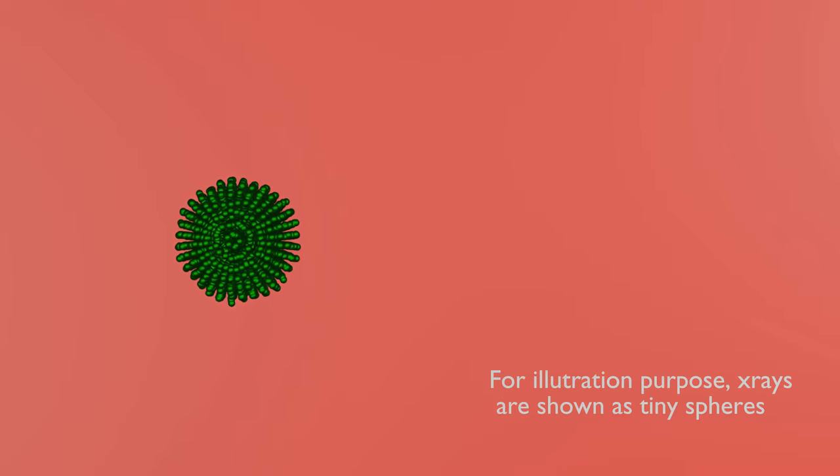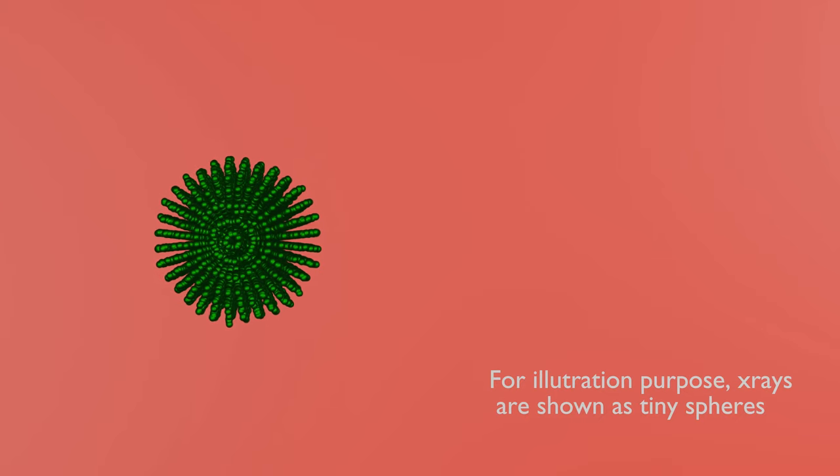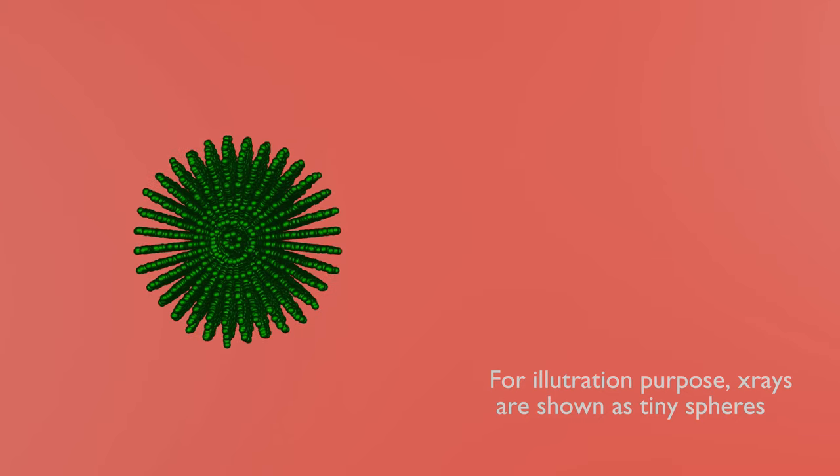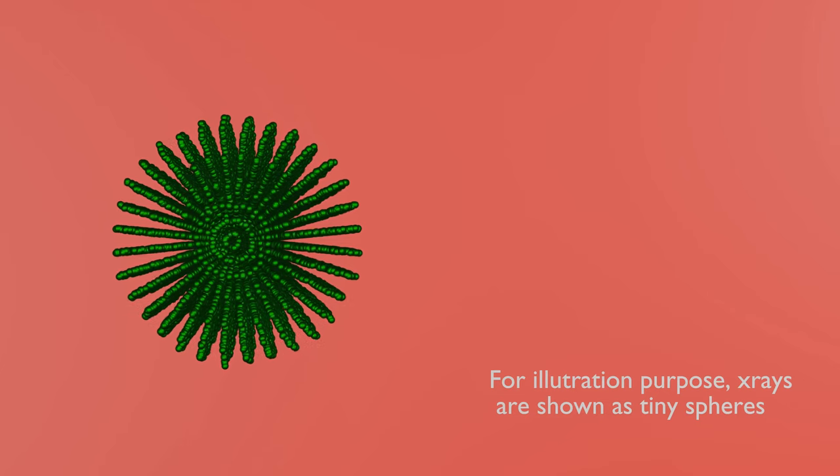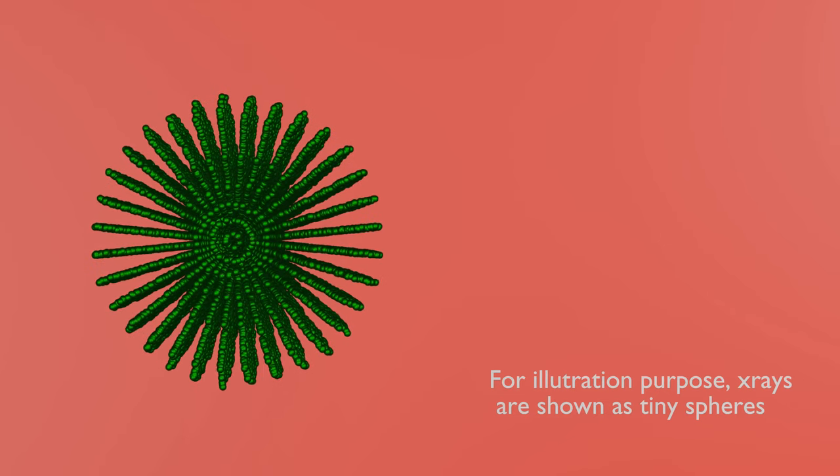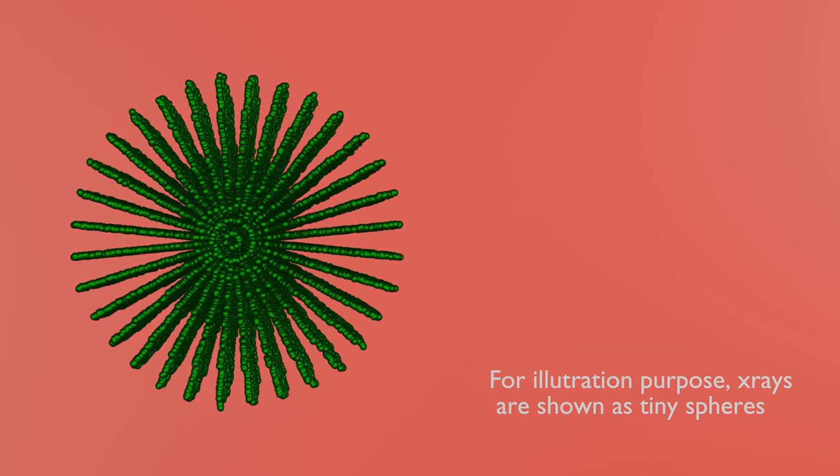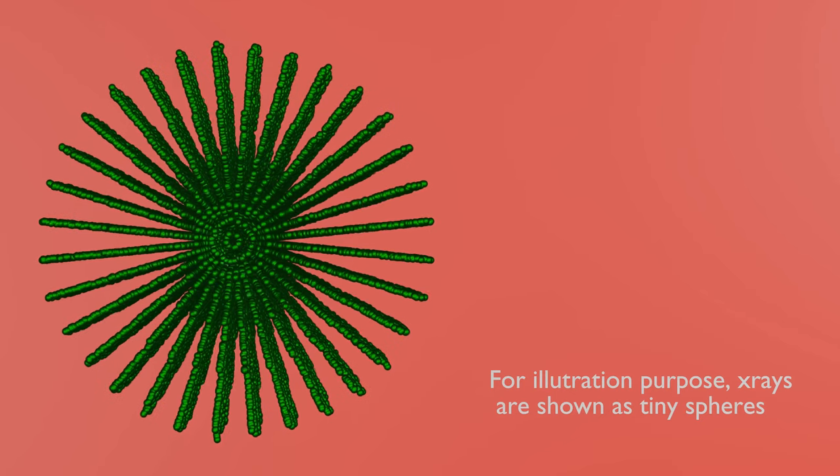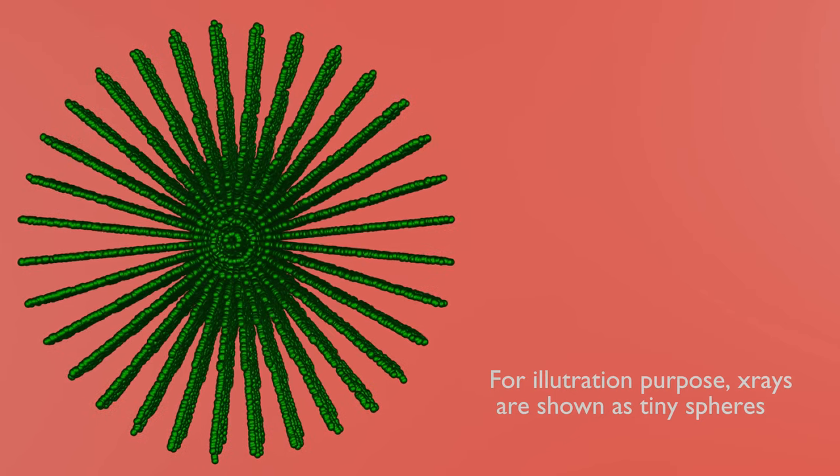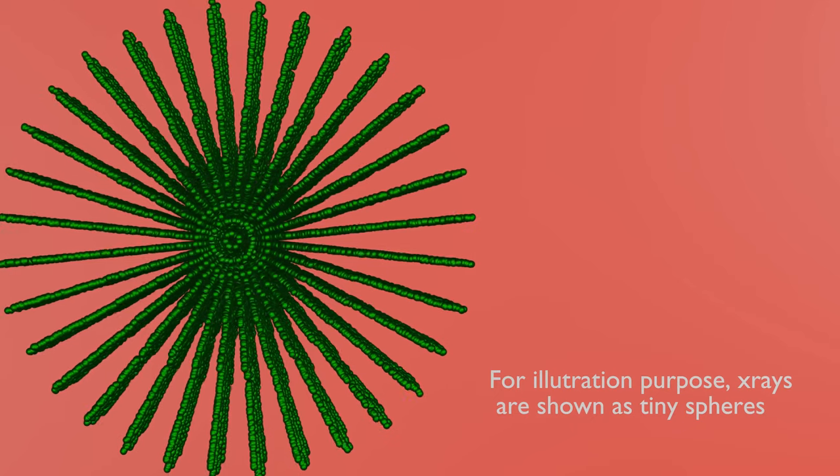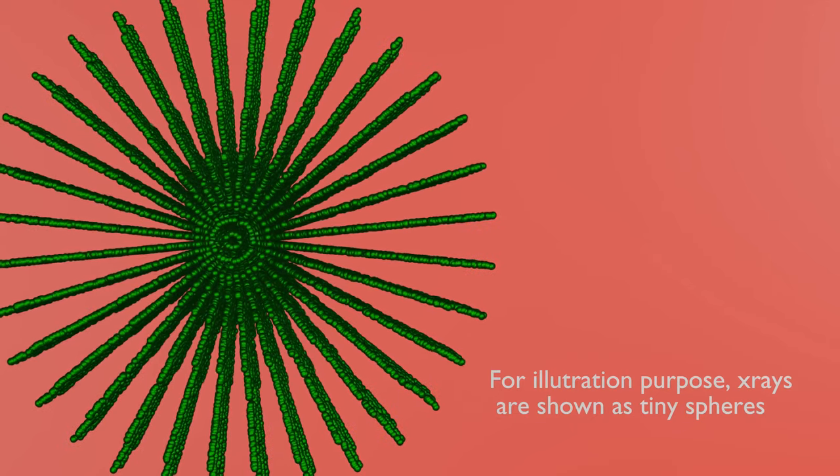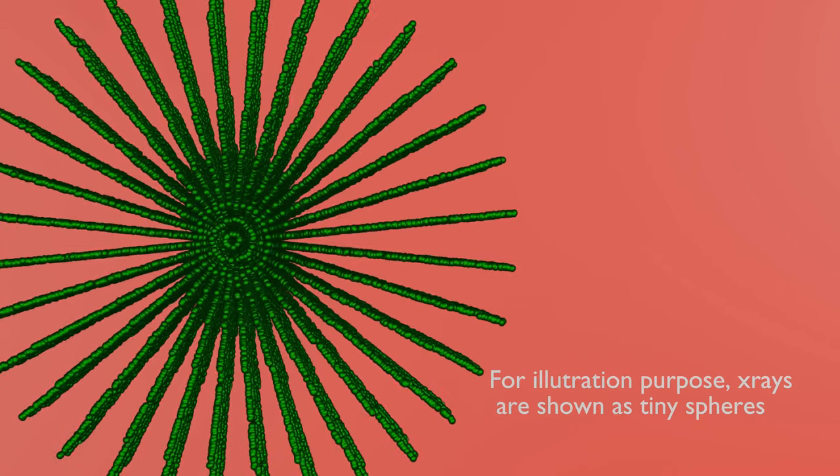In order to understand why this intensity variation is happening, let's consider an x-ray source. This source of x-ray emits x-rays of same intensity in all directions. If these x-rays are to pass through matter, the matter will absorb a fraction of x-rays.